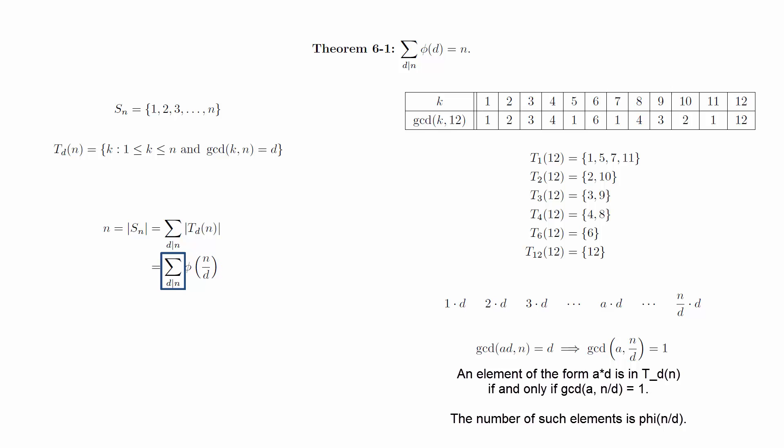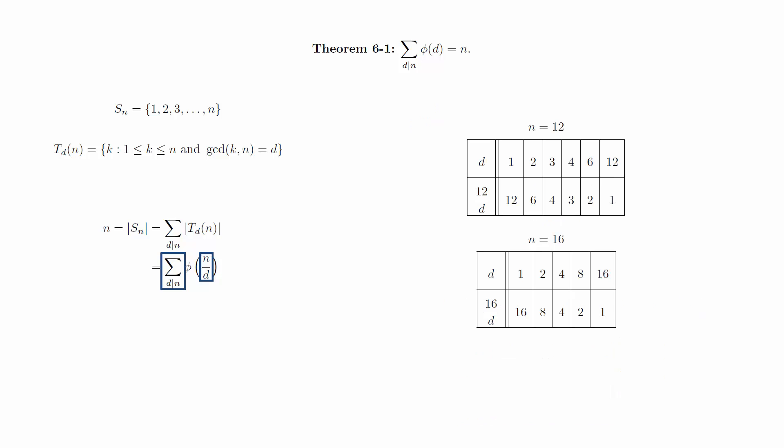The last observation is that as the sum cycles through all the divisors of n, the values n over d also cycle through all the divisors of n. Here are some numerical examples that demonstrate this. This observation allows us to rewrite the final sum without the fraction and proves the result.